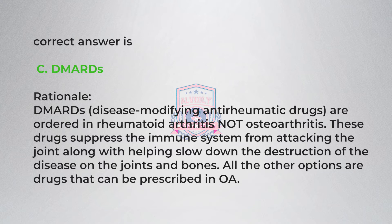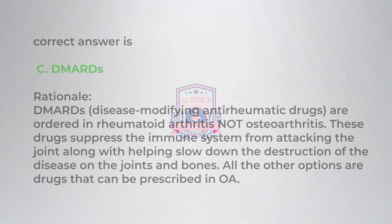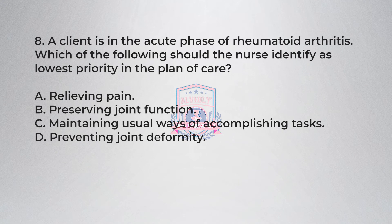Question eight: A client is in the acute phase of rheumatoid arthritis. Which of the following should the nurse identify as the lowest priority in the plan of care? A) Relieving pain, B) preserving joint function, C) maintaining usual ways of accomplishing tasks, D) preventing joint deformity.